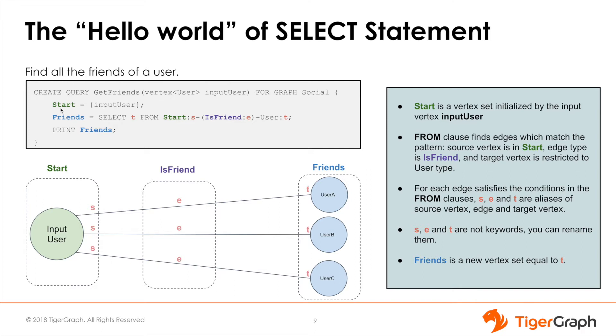Friends is also a vertex set which contains the results of our traversal by selecting T. So now you may be wondering what T is. To answer that question, let's begin with the FROM clause.